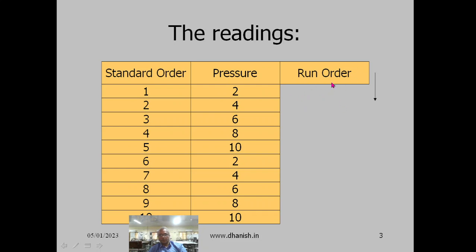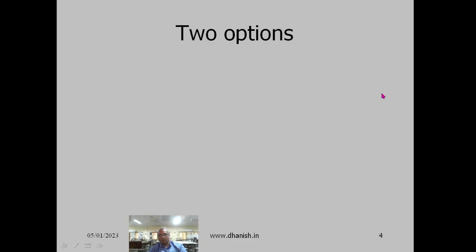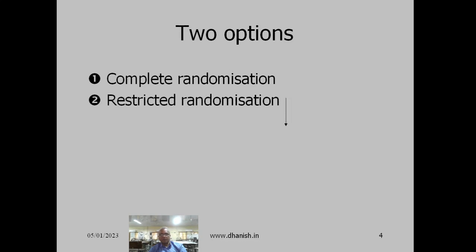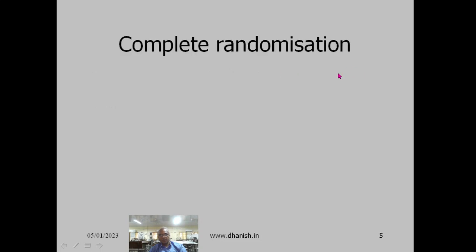To generate a run order, there are two methods. One is complete randomization, where the entire 10 runs can be randomized. The other is restricted randomization or block-wise randomization, where each block is randomized separately. Let us first do complete randomization.